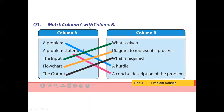Question number 3: match column A with column B. First, a problem is matched with a hurdle — shown with a blue line. Second, a problem statement is matched with a concise description of the problem — shown with a pink line. A problem statement is basically a clear description of what the problem is about and which steps should be taken to solve it. Third, input means what is given in the problem — the raw data — matched with a green line.